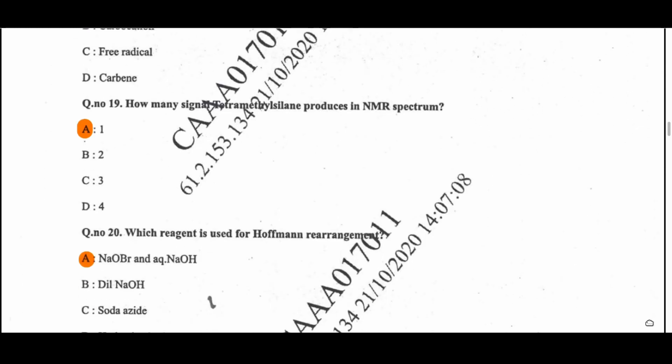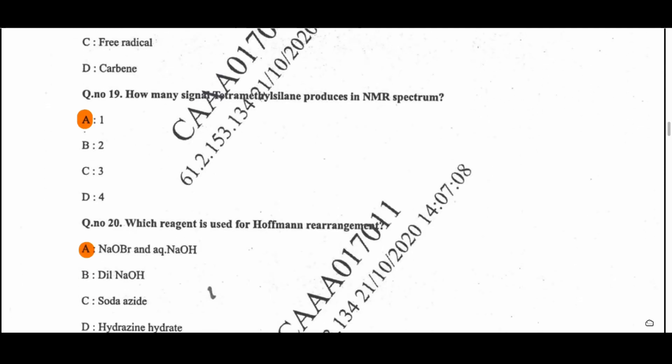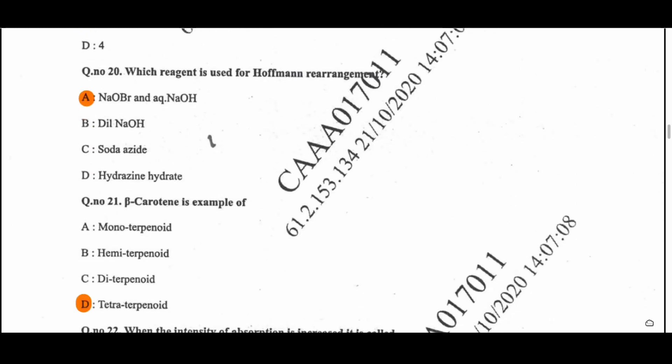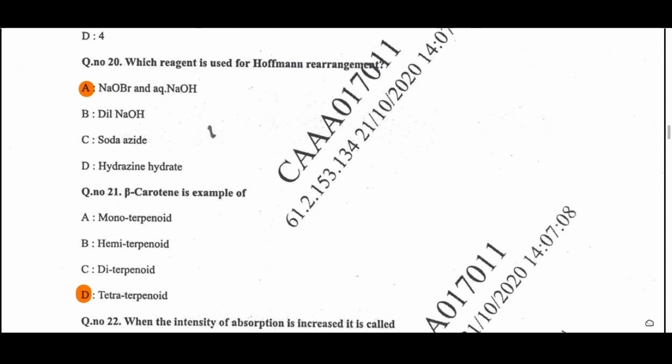Question 19: How many signals are produced by tetramethylsilane? Option A — there is only one signal produced by all 12 protons present in TMS. Question 20: Which reagent is used for Hofmann rearrangement? That is NaOBr and aqueous NaOH, i.e., sodium hypobromide in aqueous NaOH. Option A is the correct option.